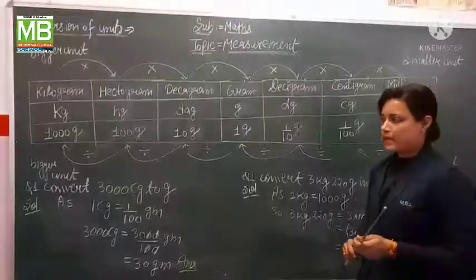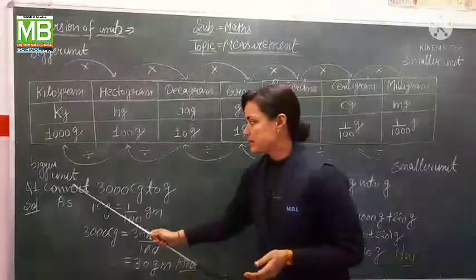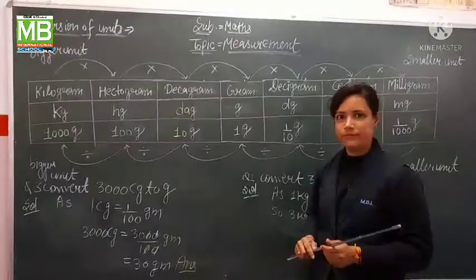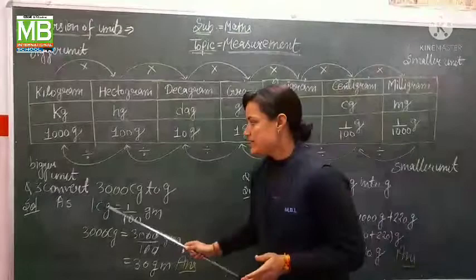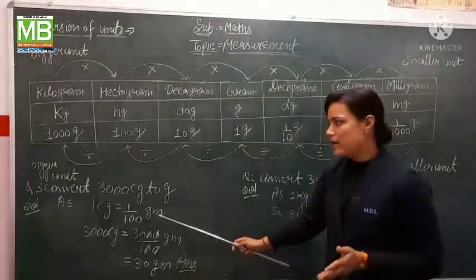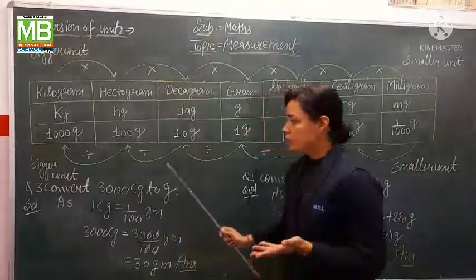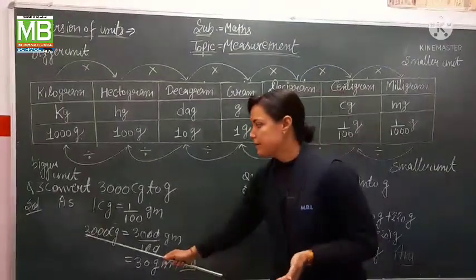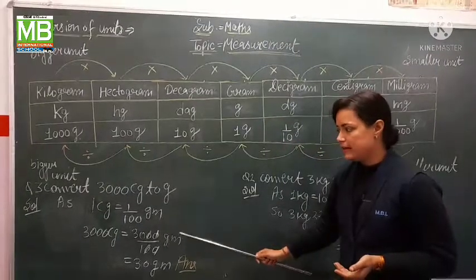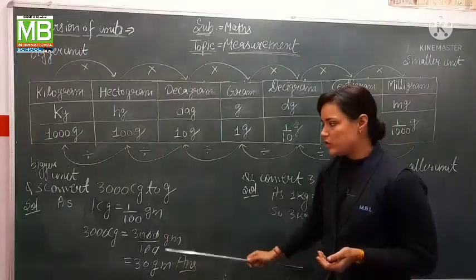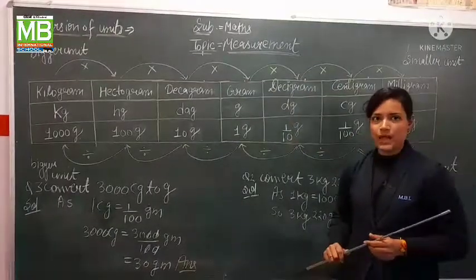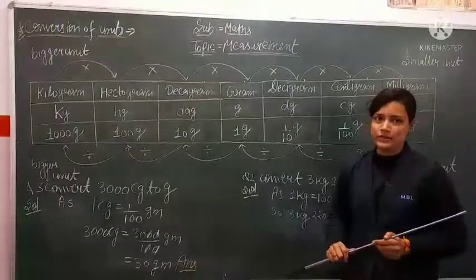Next question: convert 3000 centigram to gram. 1 centigram equals 1/100 gram. From centigram to gram we divide. 3000 centigram equals 3000 divided by 100 gram. The zeros cancel out, and the answer is 30 gram. I hope you understood. Thank you so much.